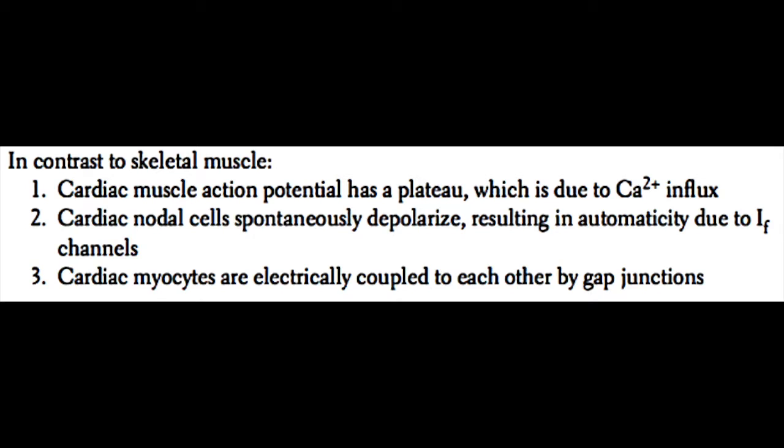And third, cardiac myocytes are electrically coupled to each other by gap junctions, so that when one cell activates, it will then activate the neighboring cell by changes in voltage.